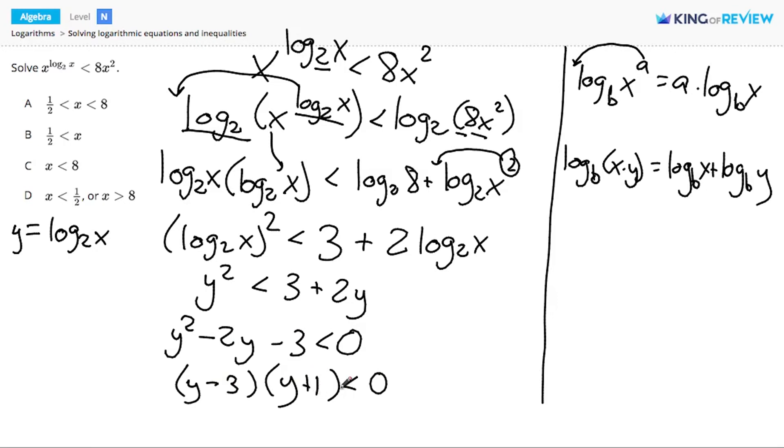So this means I have two options. I need this product to be less than 0, which means y minus 3 could be positive and y plus 1 could be negative, or y minus 3 could be negative and y plus 1 could be positive. On the left side, this gives us y is greater than 3 and y is less than negative 1, but it's impossible to be bigger than 3 and also smaller than negative 1. So this doesn't work.